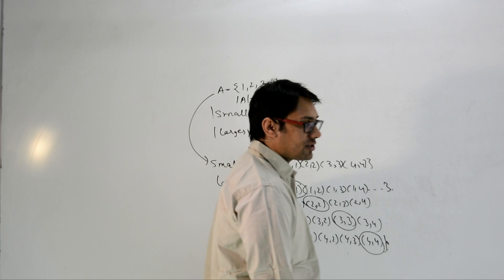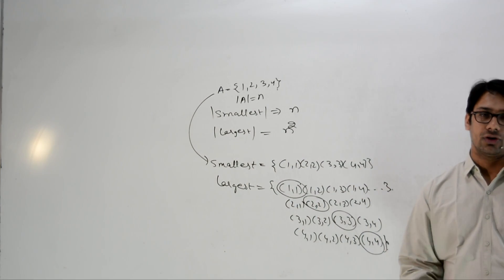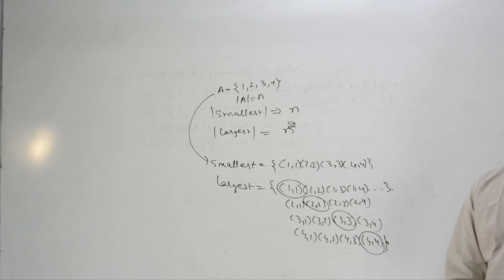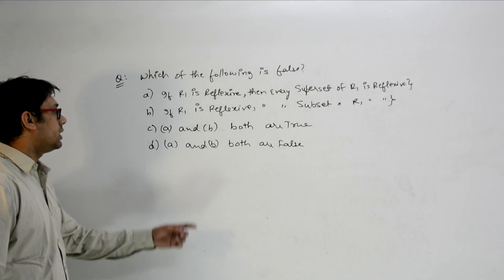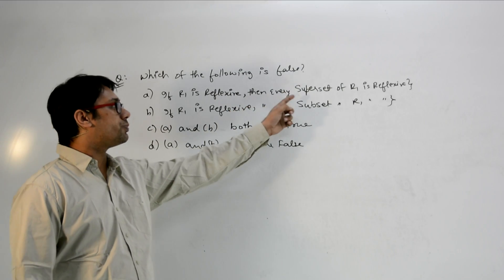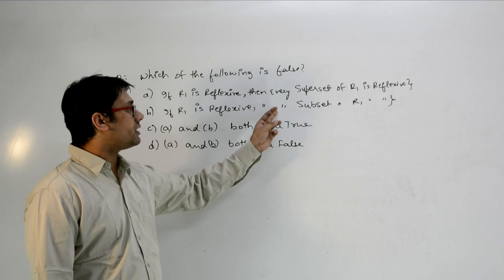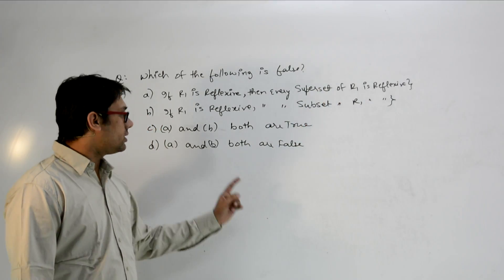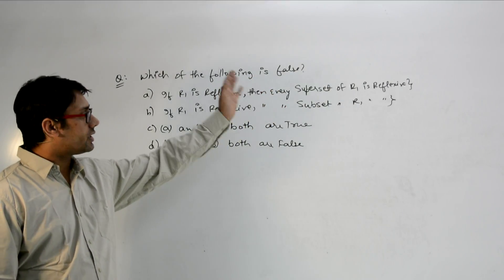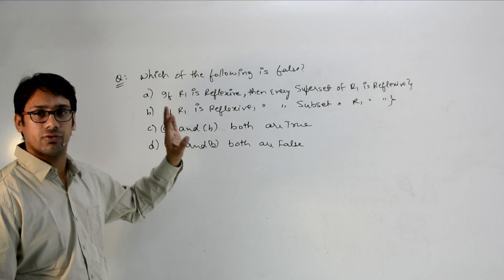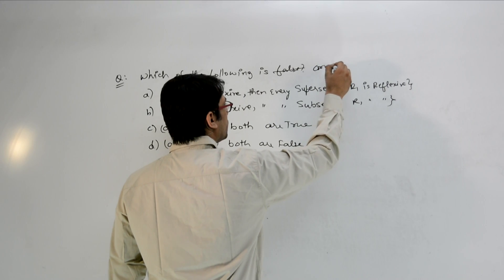Now let me take one or two more questions on reflexive relations. Identify which of the following is true or false — which option is correct: (A) if R1 is reflexive, then every superset of R1 is reflexive; (B) if R1 is reflexive, then every subset of R1 is reflexive; (C) A and B both are true; (D) A and B both are false.